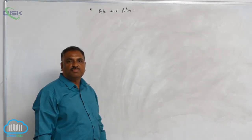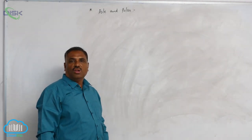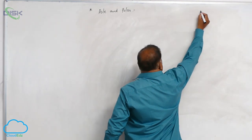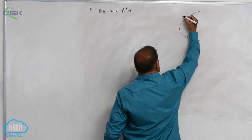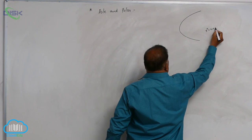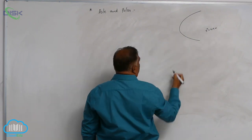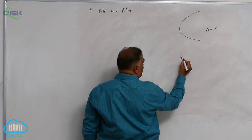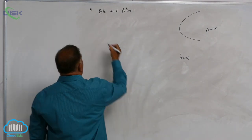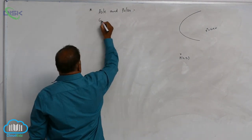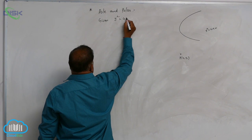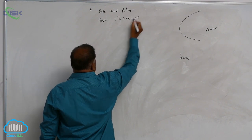Let us discuss the concept of pole and polar. The parabola is y² = 4ax. Let P(x₁, y₁) be a given point. The given parabola is y² = 4ax — call it equation 1.